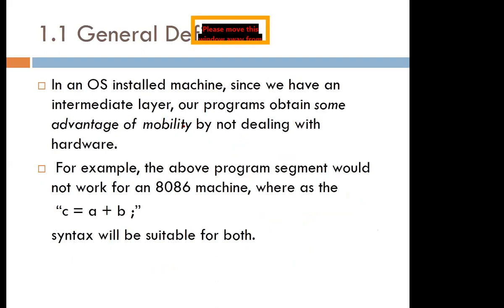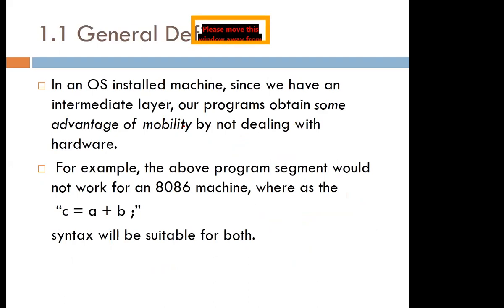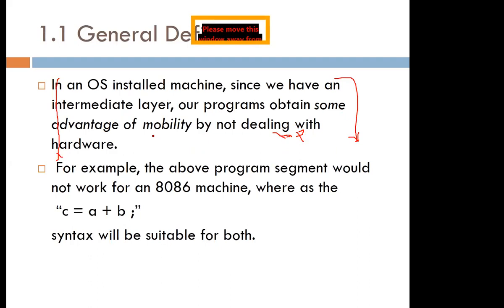On a machine with an operating system installed, programs gain the advantage of mobility by not dealing with the hardware directly. If you have an HP machine and someone has a Mac, you can take a file written on the HP machine and still read and edit it on the Mac — because the intermediary layer is provided by the operating system. Without it, there would be no mobility of programs from one machine to another.